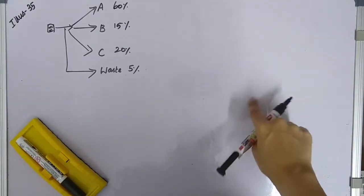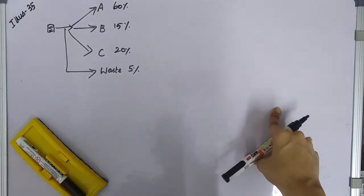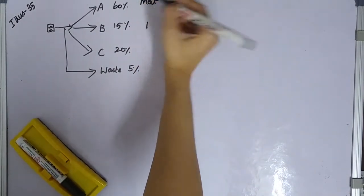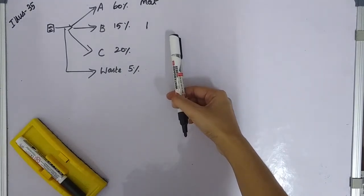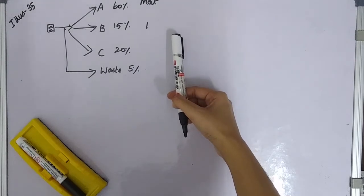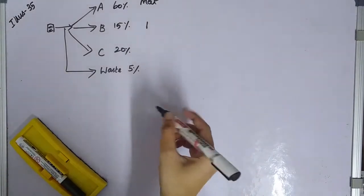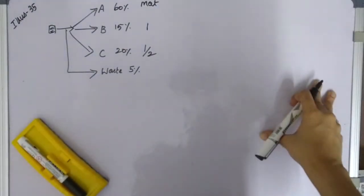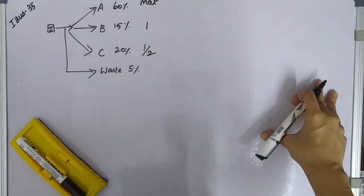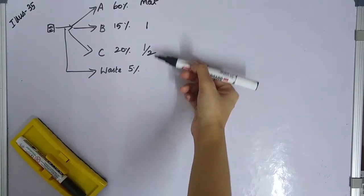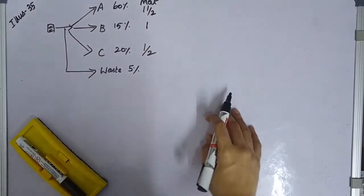One unit of product C requires half the raw material of one unit of product B, so product B gets ratio 1. Product A requires one and a half times the raw material required for product B. So combining A, B, and C: A = 1.5, B = 1, C = 0.5.